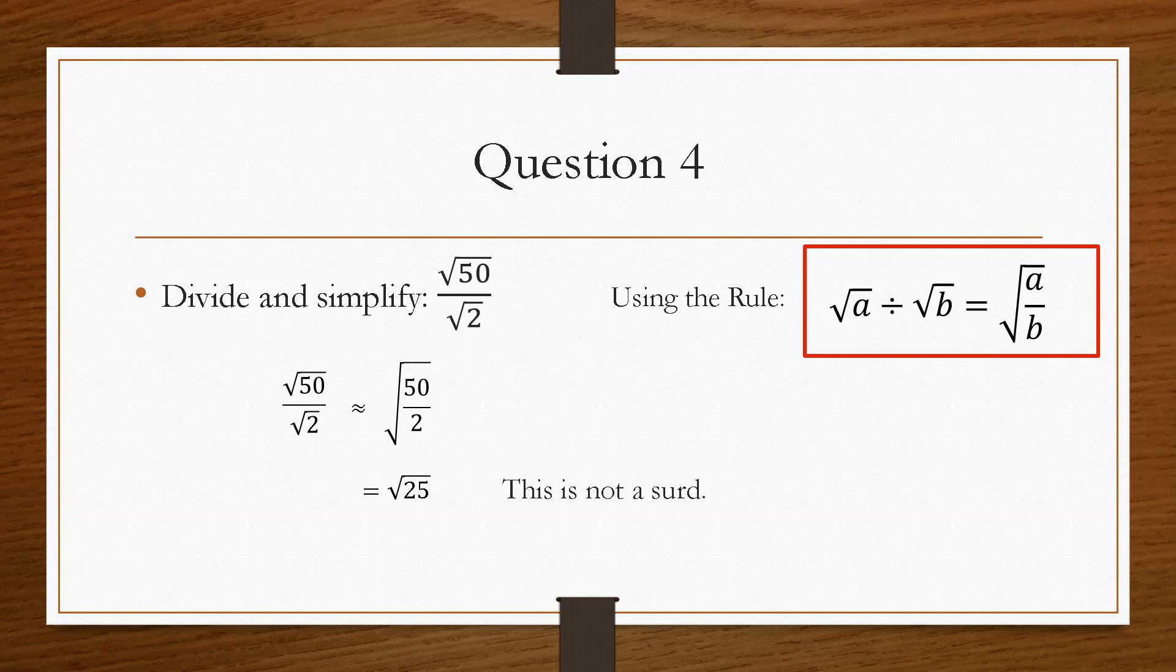Which is not a surd, because this is one of the key values. So √25 becomes 5. And that's how you would go about multiplying and dividing surds.